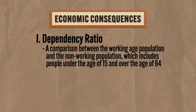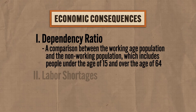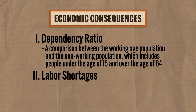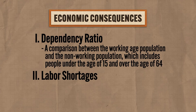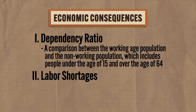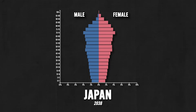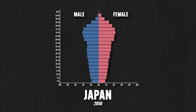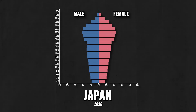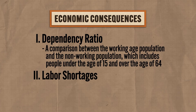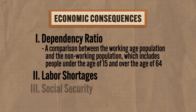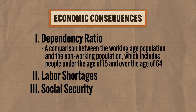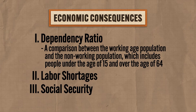First, a country like Japan will likely face labor shortages. As fewer and fewer people are in the working-age cohorts, economic growth will begin to slow unless the government encourages immigration of working-age folks from elsewhere. Second, as the dependency ratio increases, retirement programs like social security in the United States will struggle with funding.